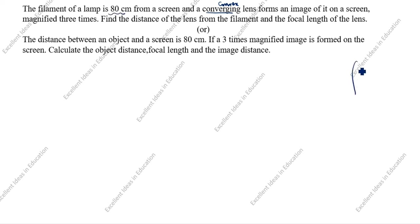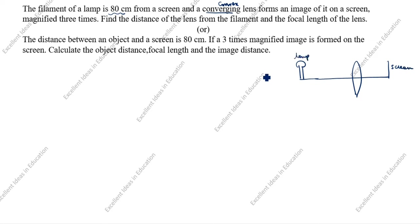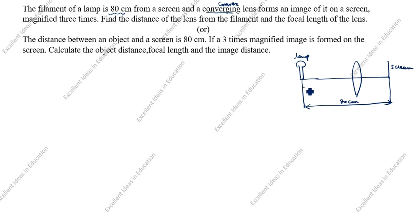I will draw the data. Here is the convex lens, and the filament of a lamp is the object. The screen is the image side. The distance from the filament to the screen is given as 80 centimeters. As I always say, the object distance for a lens is always negative, so U is negative and V is the image distance.